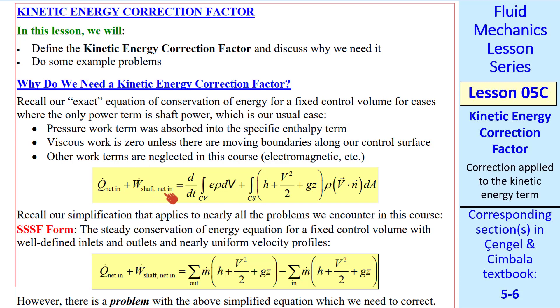Only the shaft part remains here because the pressure work term was absorbed into this specific enthalpy term. The viscous work term is usually zero unless we have moving boundaries along our control surface, and we'll always neglect other work terms in this course. So this equation is exact.